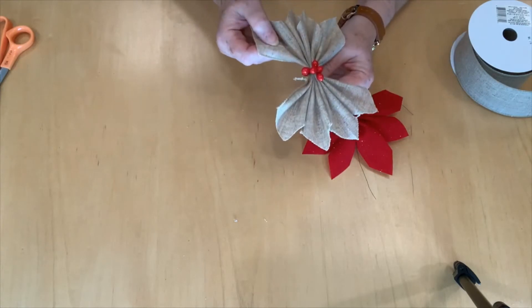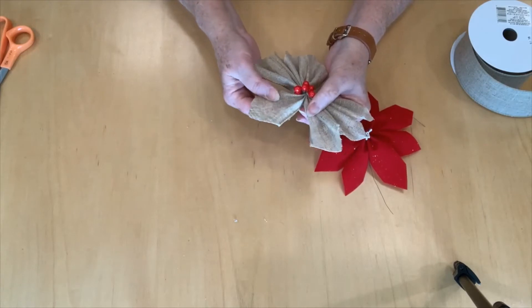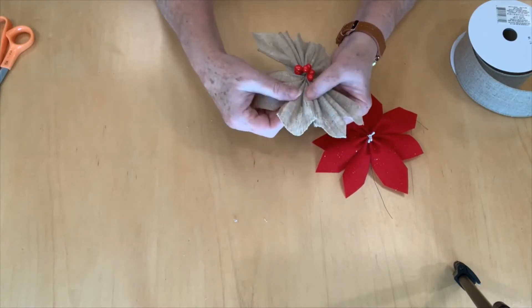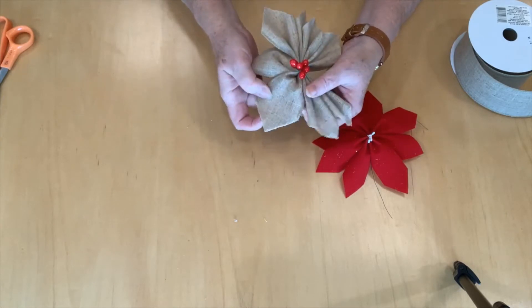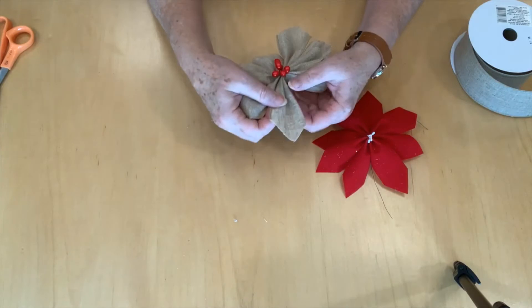Now we get to make it look like a poinsettia and you do that by pulling it out and pushing up in the center where that fold is. Pulling out, pushing up. We're going to do that with all eight of these leaves.